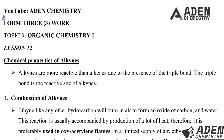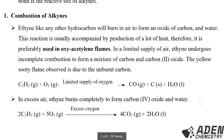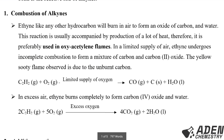The first chemical property of alkynes is combustion. Ethyne, like any other hydrocarbon, will burn in air to form an oxide of carbon and also water. This reaction is usually accompanied by production of a lot of heat, therefore it is preferably used in oxygen-acetylene flames.